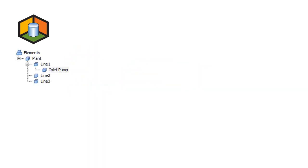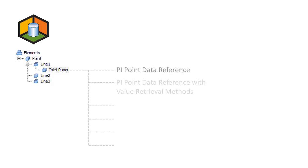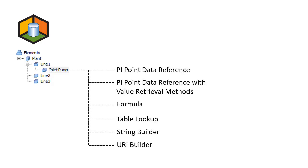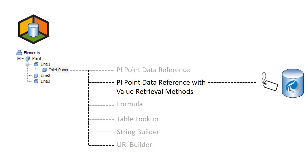Data references are used to associate various items to attributes in your AF hierarchy. In the case of PI Point data references, we have the option to add value retrieval methods. Value retrieval methods change the type of requests for data made to the PI Data archive, based on the time context of the client. Before hopping onto PI System Explorer to configure a PI Point data reference with a value retrieval method, let's explore what's meant by the client time context.